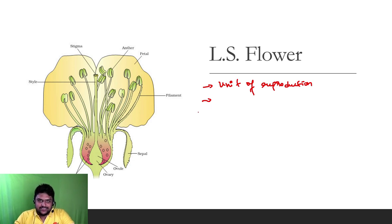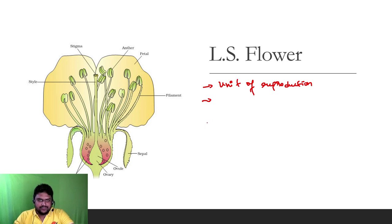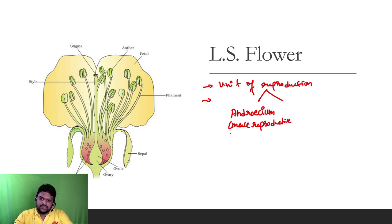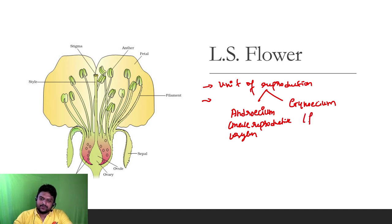We call it the LS of flower. What is a flower? It is the unit of reproduction, and it has reproductive organs. The first part is called the androecium — it is the male reproductive part. The second is the gynoecium — it is the female reproductive organ.